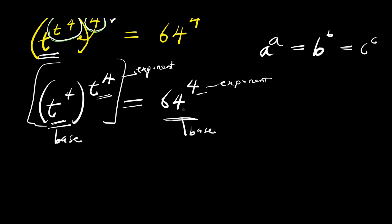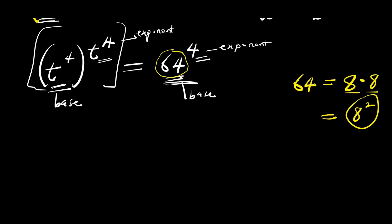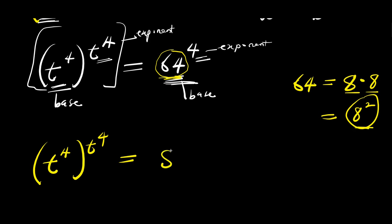We need to ensure that 64 and the 4 are the same. How do we achieve that? Remember, 64 is a perfect square: 64 equals 8 times 8, which is the same as writing 8 to the power of 2. So t to the power of 4, raised to the power of t to the power of 4, equals 8 to the power of 2.